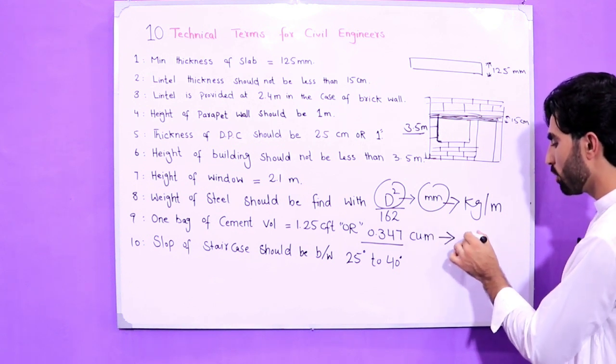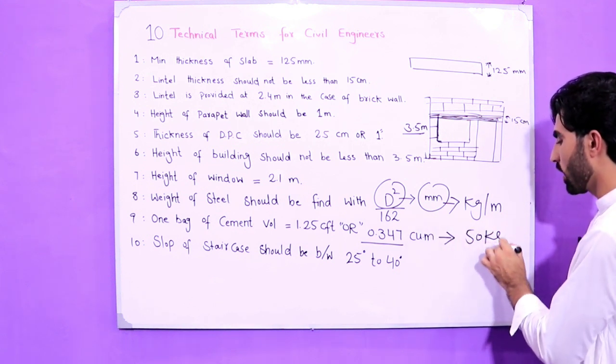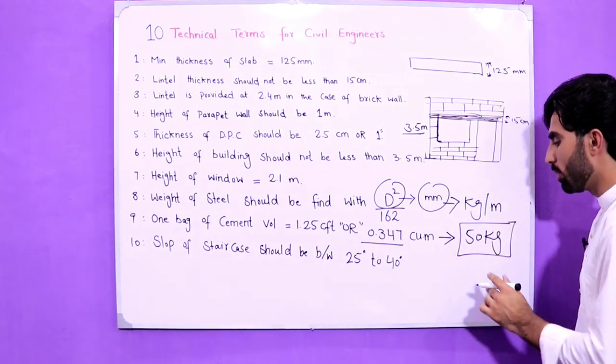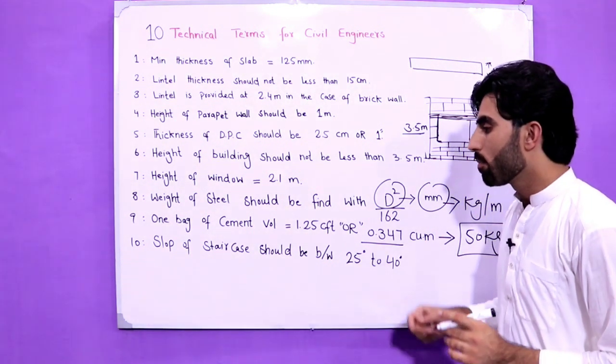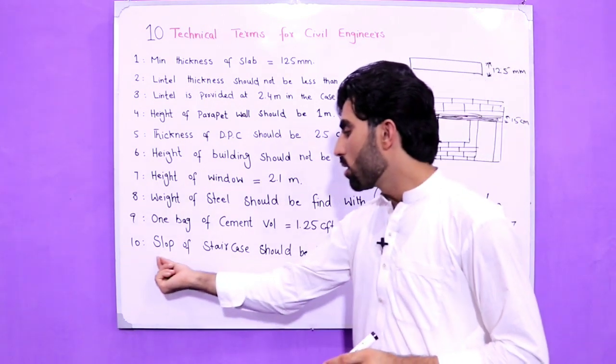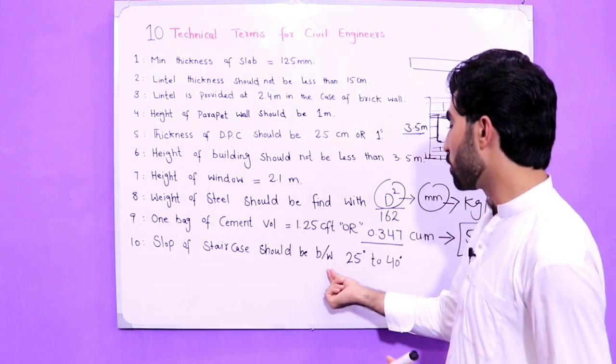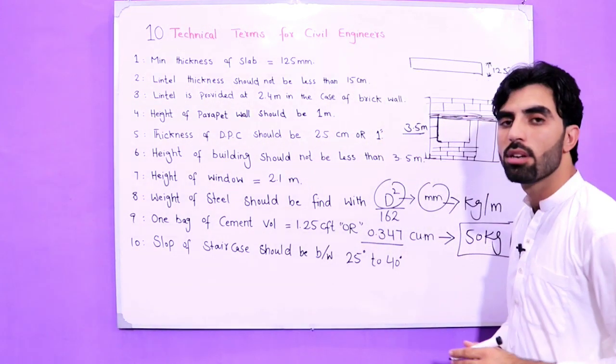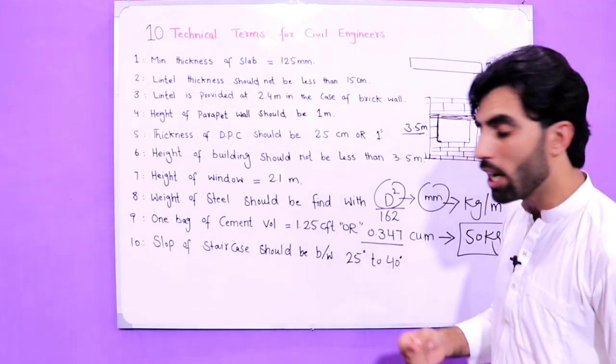Now the last one is slope of staircase should be between 25 to 40 degrees. It should not be more than 40 degrees, otherwise it will be difficult for those people which are going upside.